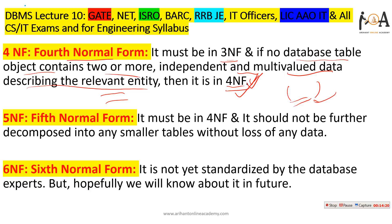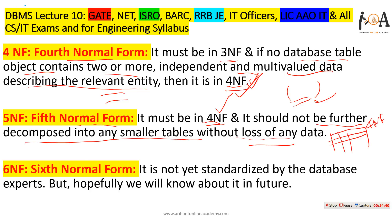For Fifth Normal Form (5NF): the prerequisite is that the table must be in 4NF, and it should not be further decomposable into any smaller table without loss of data. If it is not possible to decompose it into a smaller table without losing data, then it is in 5NF. Sixth Normal Form (6NF) is not yet standardized by DBMS experts, but we will learn about it in the future.